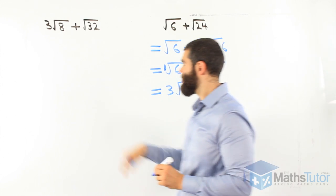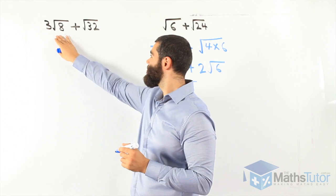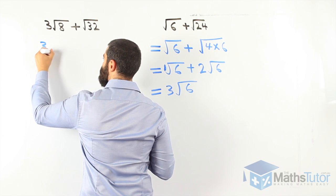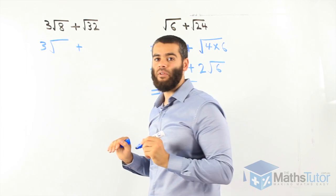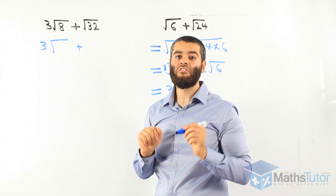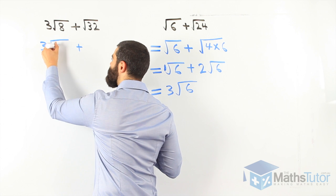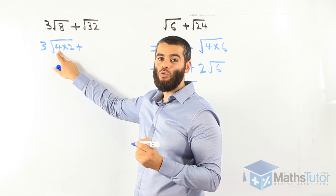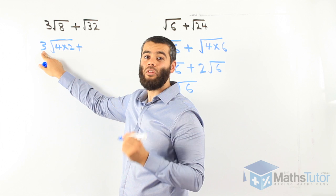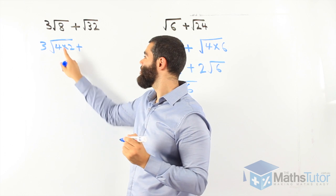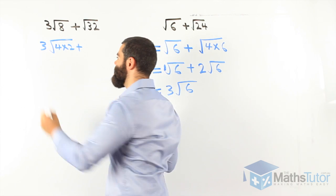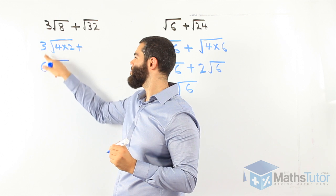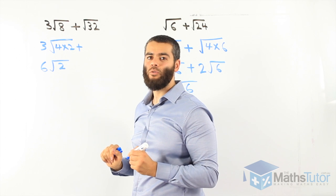3 root 8 plus root 32 — the thirds are different, so we simplify. For root 8, we use 4 times 2: 4 square roots to give 2, and 2 times 3 already outside gives 6 root 2. For root 32, we use 16 times 2: square root of 16 is 4, so it becomes 4 root 2. We have now simplified 3 root 8 to 6 root 2.